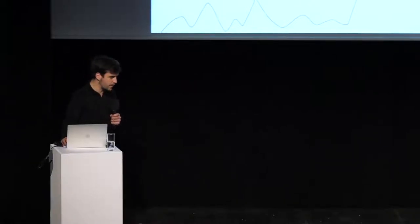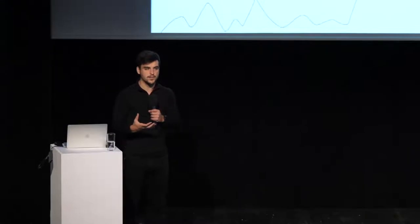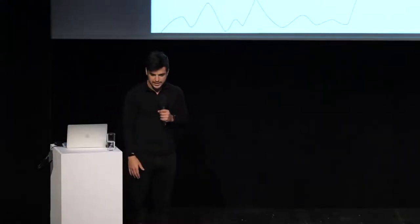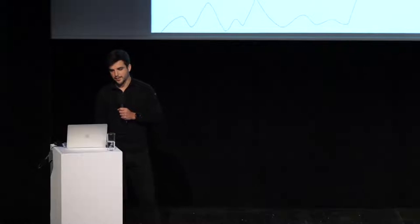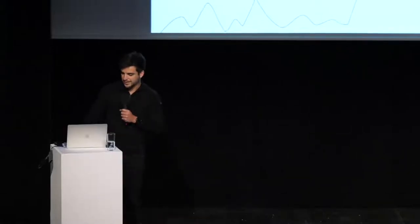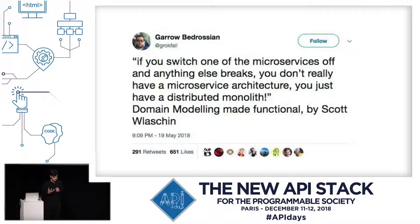We've kind of grown from a lot of people that are used to writing monoliths, or writing the one generic API, to a company that suddenly has loads of APIs all set next to each other. So we kind of naturally evolved into having a service-orientated architecture or potentially a microservice-based system without really planning it or expecting it or realizing what that would entail. So there's this quote: if you switch off one of the microservices and anything else breaks, you don't have a microservice architecture — you just have a distributed monolith. Just having one system with a bunch of endpoints, or having lots of systems that all rely on each other, doesn't really mean you have microservice architecture. It just means you have this big monolith running on different servers. That's not really a situation you want to be in.